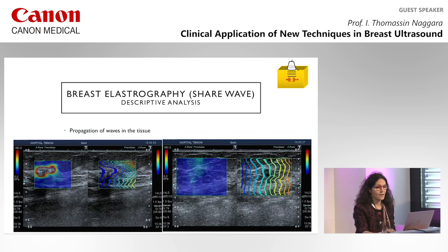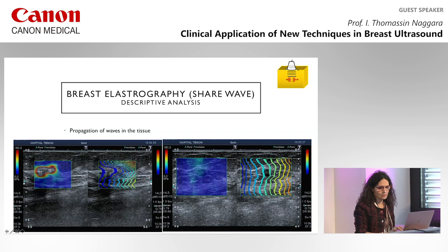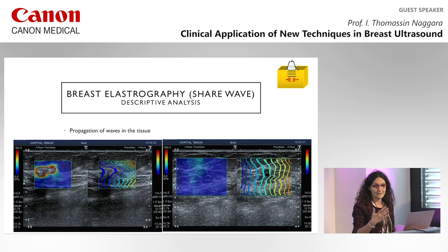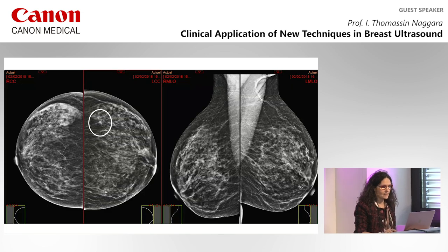For shear wave there are two types of analysis. The first is a descriptive analysis where you can see the propagation of waves in the tissue. In a cancer there is a deformation of the wave, whereas in a benign lesion you will have no deformation. This is a qualitative approach and the first step when performing shear wave analysis. Here is an example of a lesion detected in the external quadrant of the left breast.